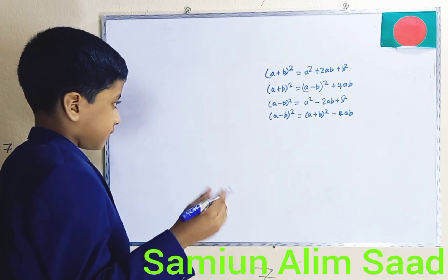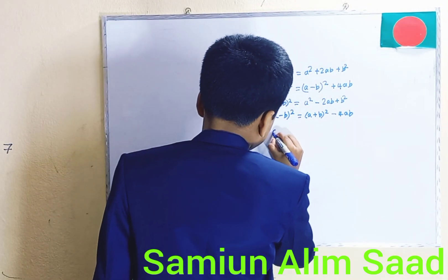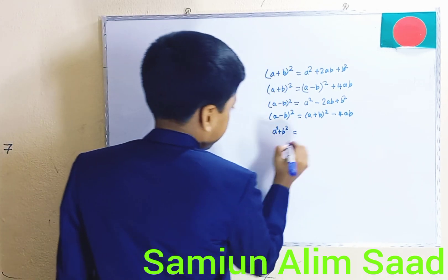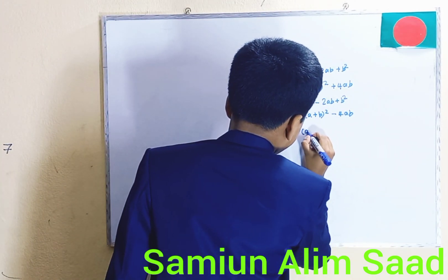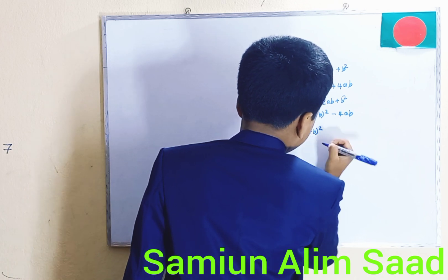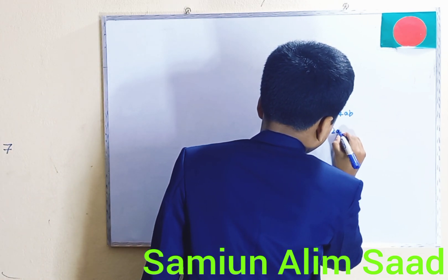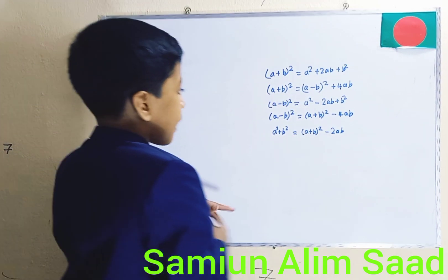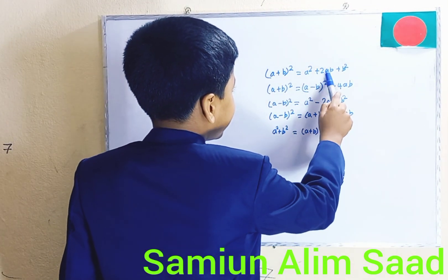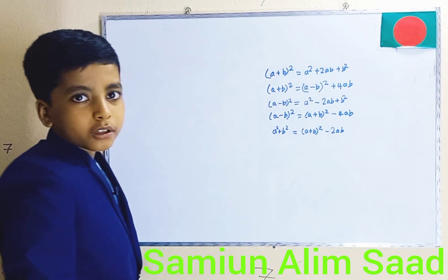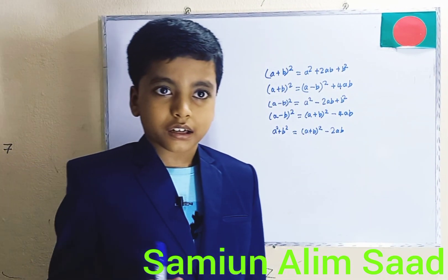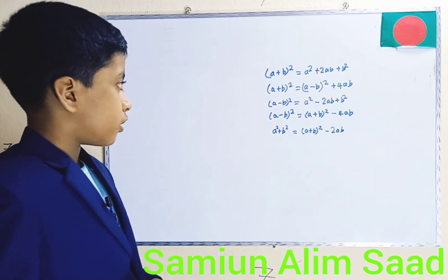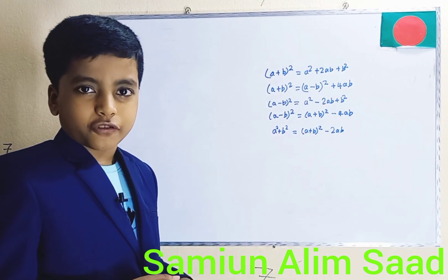Let's move on to the next formula. That is A squared plus B squared, and it's equal to A plus B whole square minus 2AB. It's simple — just subtract 2AB from it. I'm going to prove it in a different video, so stay tuned for that.